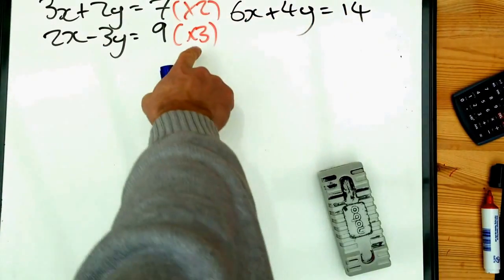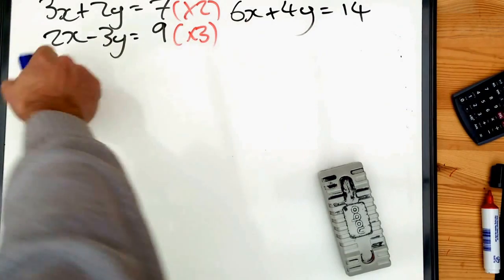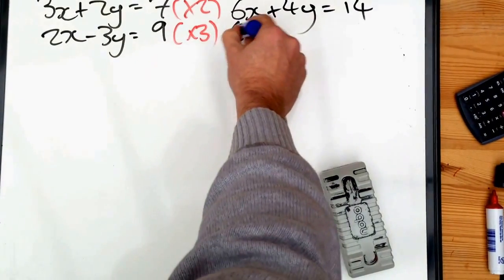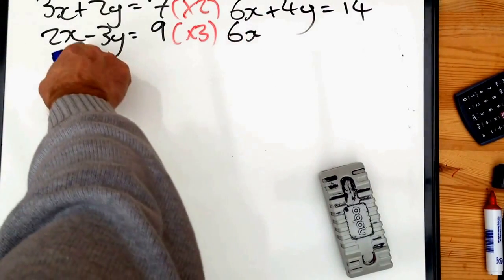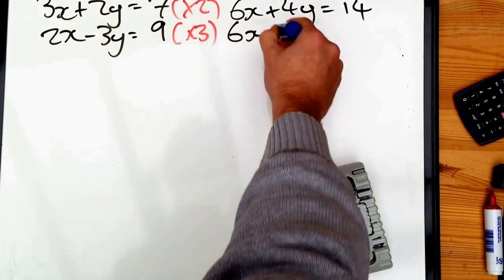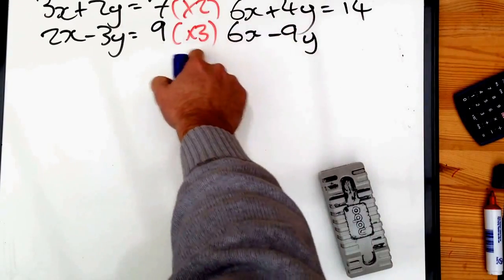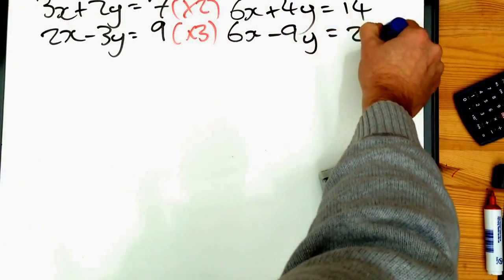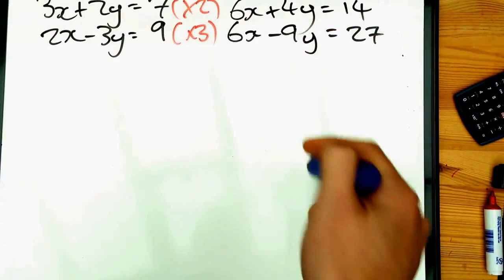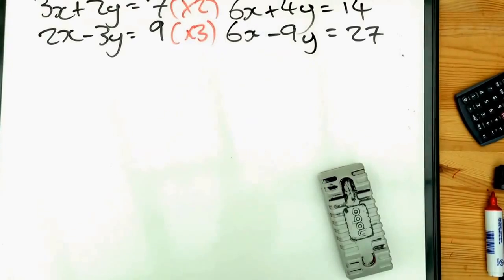Similarly, on the bottom, I'm multiplying by three this time. Three times two x is six x. Three times minus three y is minus nine y. Three times nine is twenty-seven. So we now have the same number of x's in both equations.